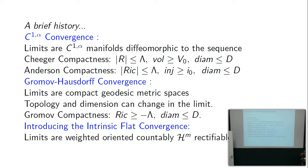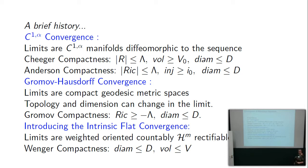Intrinsic flat convergence: the limit spaces are weighted oriented countably H^m rectifiable spaces — spaces covered by Lipschitz charts except on a set of H^m measure zero, and the limits have integer-valued weights and an orientation on all these charts. Wenger's compactness theorem says if you have a sequence of Riemannian manifolds with diameter bounded above and volume bounded above, then a subsequence converges to one of these spaces, with the possibility that the limit is zero if the sequence collapses. If collapsing, the limit is zero; otherwise it's the same dimension as the sequence with Lipschitz charts.